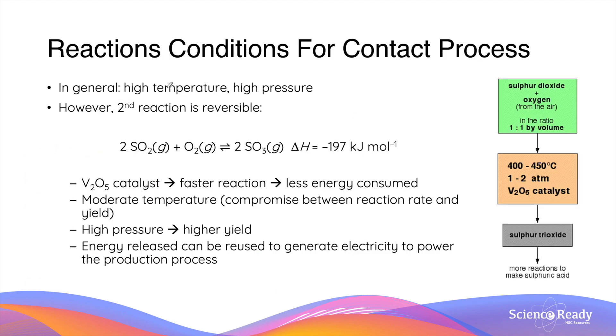In general, the contact process can be conducted at a high temperature and high pressure to increase the reaction rate. However, this is quite different for the second reaction of the contact process, where sulfur dioxide reacts with oxygen gas in an equilibrium reaction to produce sulfur trioxide. This reaction is also exothermic as shown by its negative enthalpy change.